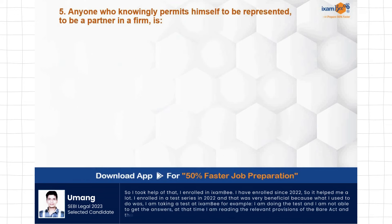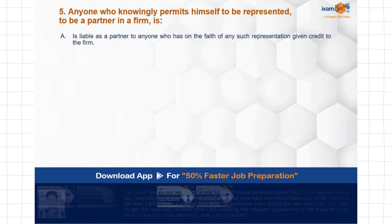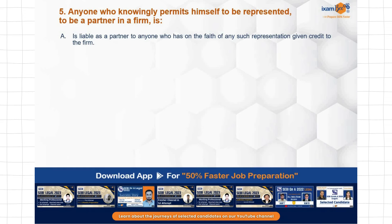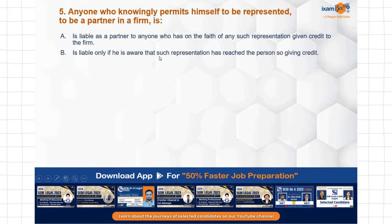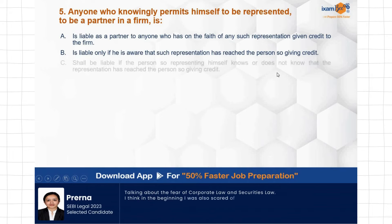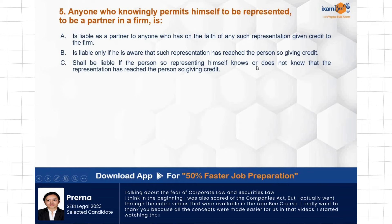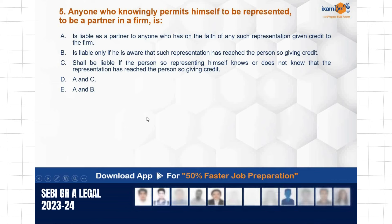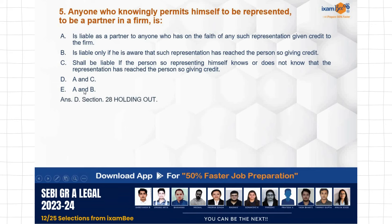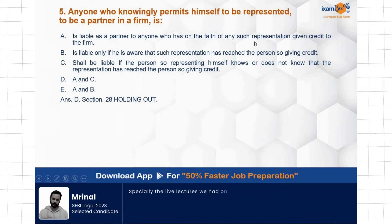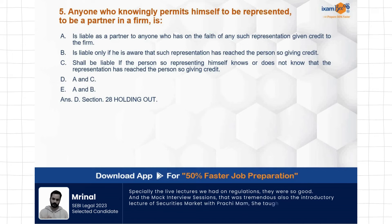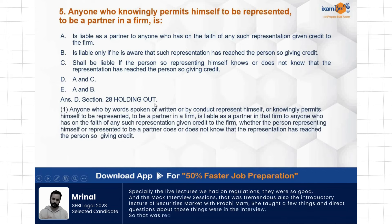Question: Anyone who knowingly permits himself to be represented as a partner in a firm is liable to anyone who has on the faith of such representation given credit to the firm. Who is liable — only if he is aware that the representation has reached the person giving credit, or shall he be liable whether or not he knows the representation has reached that person? Options include A and C are correct, A and B are correct. The correct answer is D — A and C. He is liable even if he does not know the representation has reached the person giving credit. Both conditions make him liable, covered under Section 28 — holding out.